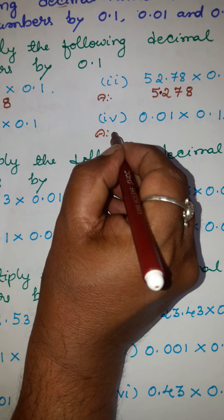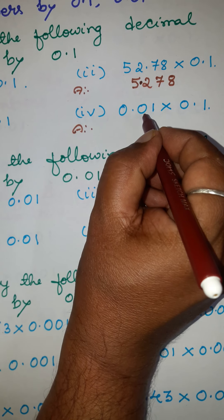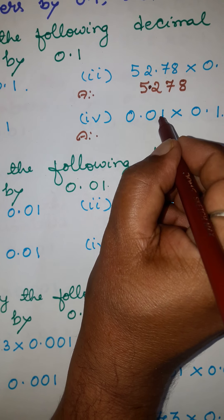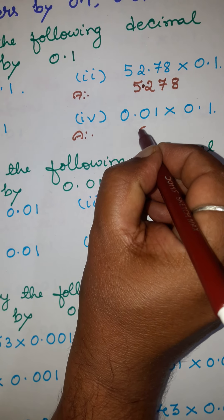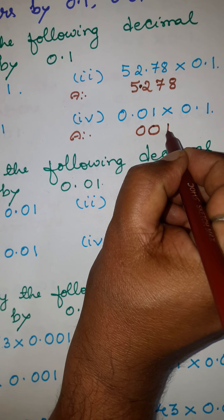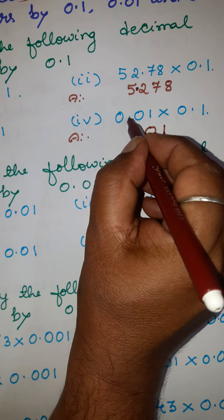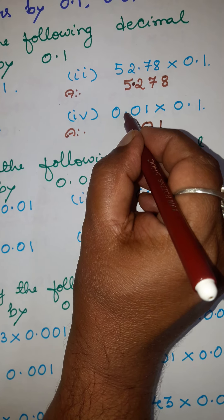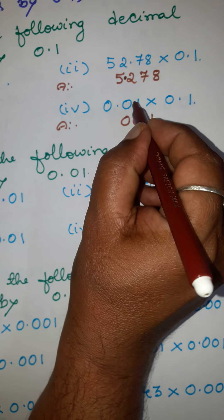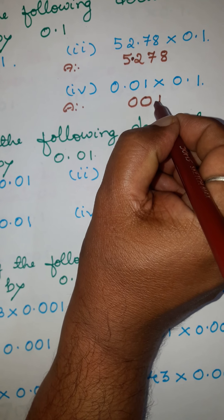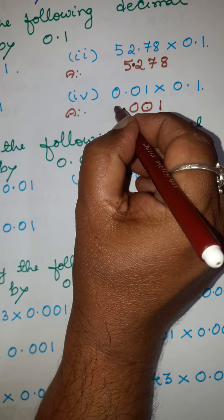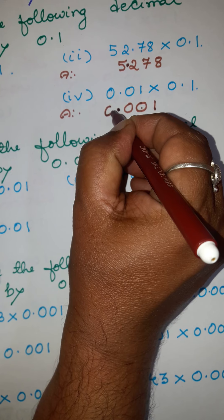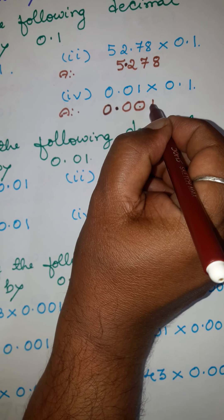Fourth example: you have 0.01. Write this number as 001, ignoring the decimal point. After the decimal point you have two places — one, two. Here after the decimal to the right we have one place. One plus two is three, so move three places — one, two, three — and put the decimal point. It is customary to put a zero here. So 0.001 is the answer.